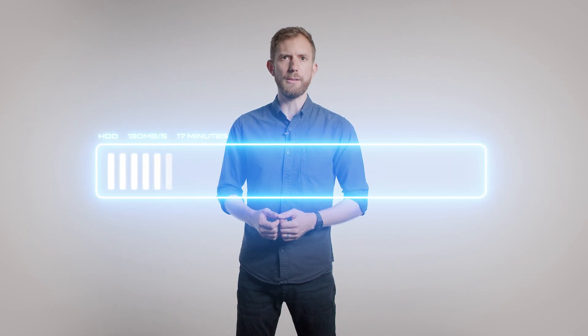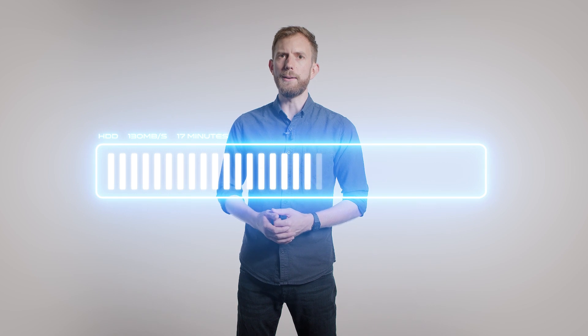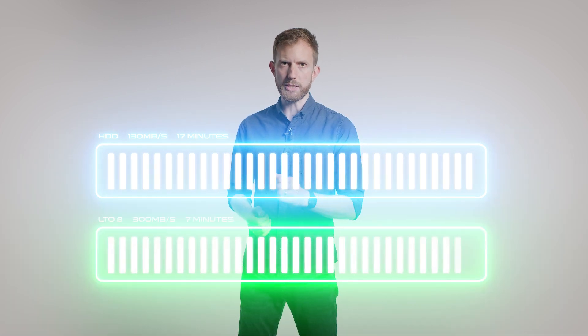A typical hard drive has an average write performance of 130 megabytes a second. To put that in perspective, you can back up a 128 gigabyte CFast card to a hard drive in about 17 minutes. Now, that's pretty good, but the same 128 gigabyte transfer with LTO8 tape can be done in just over seven minutes, more than twice as fast, because LTO can write data at 300 megabytes a second.